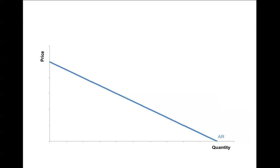We're looking at the average revenue curve now for this type of firm. The average revenue curve slopes downwards just like the demand curve because essentially the average revenue curve for a firm within monopolistic competition is the demand curve for that product.